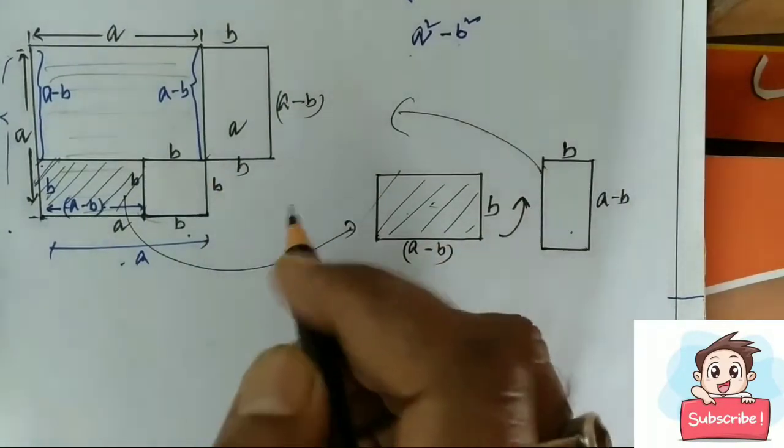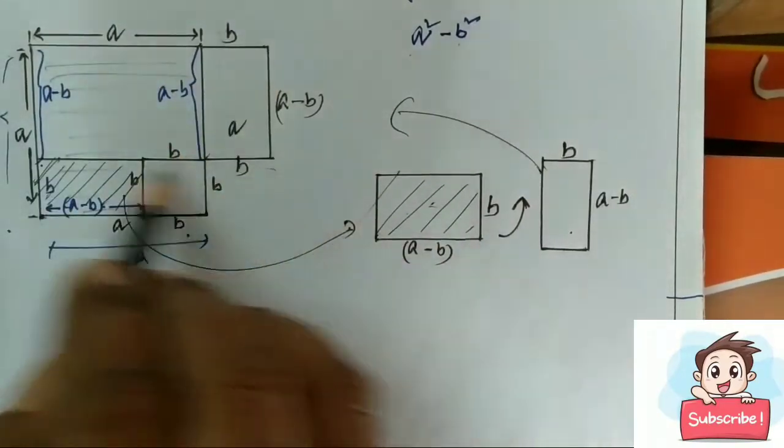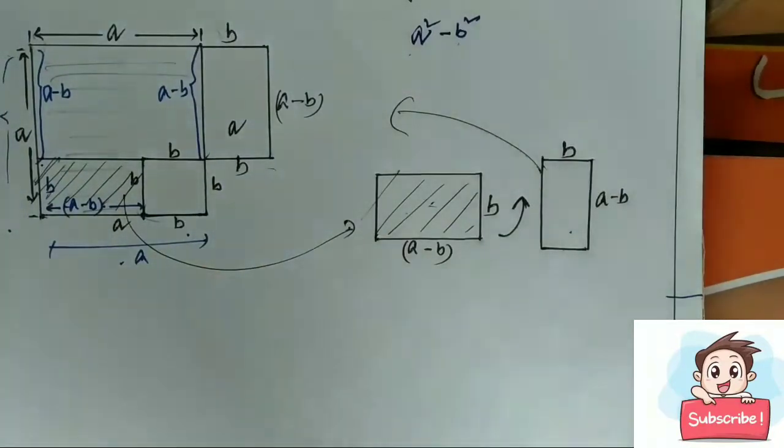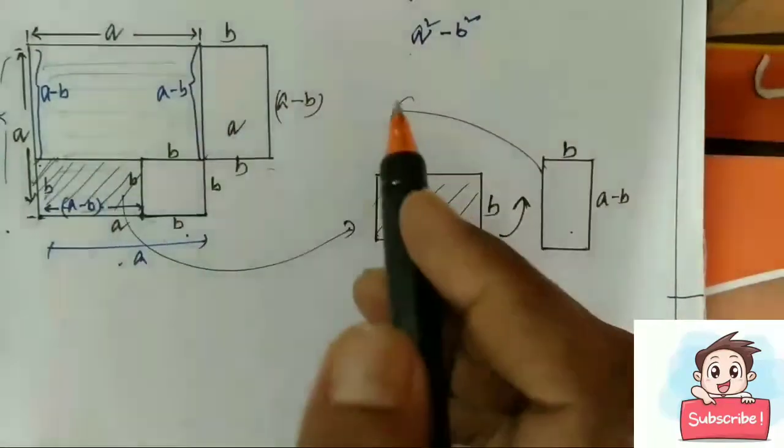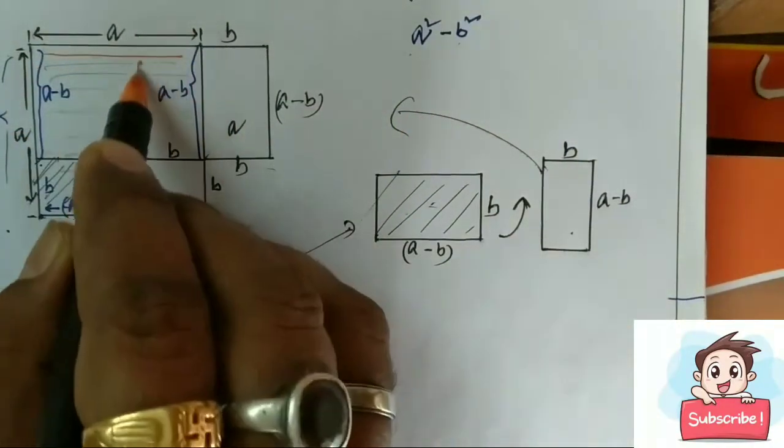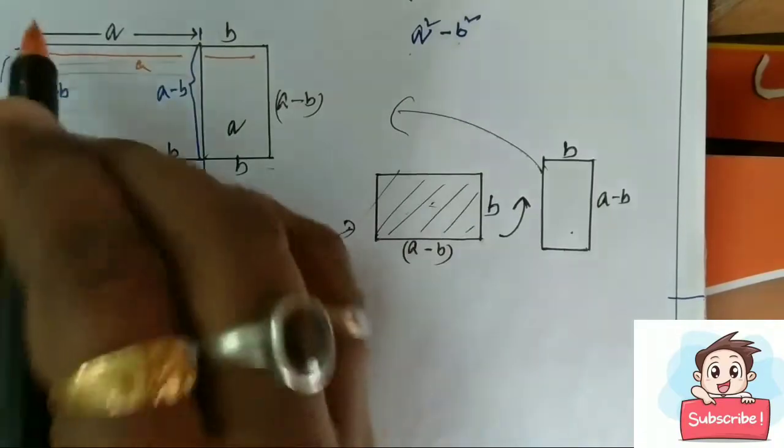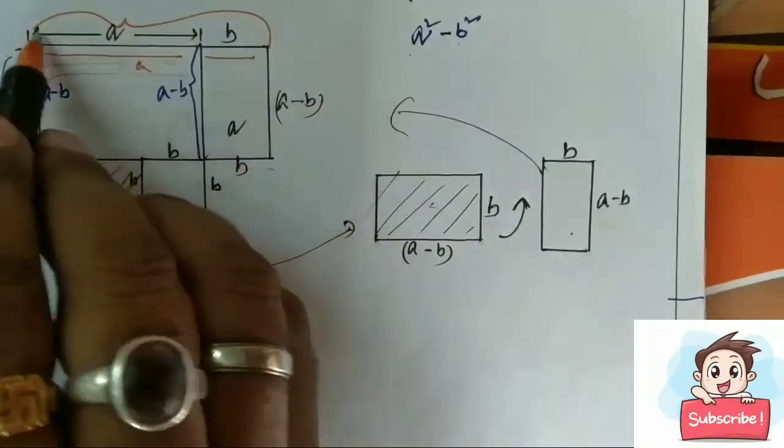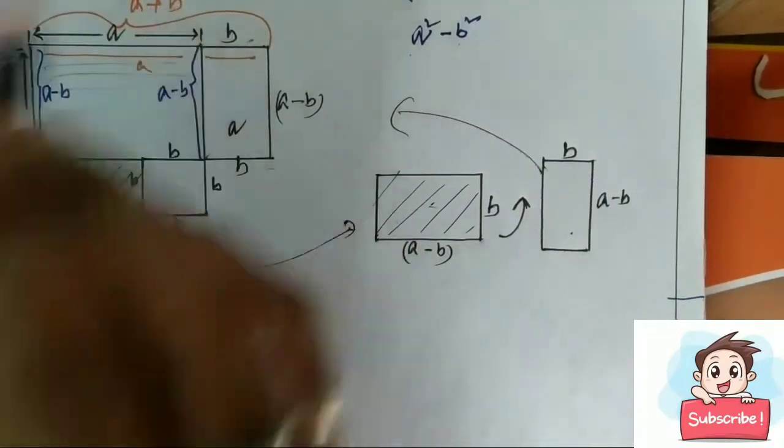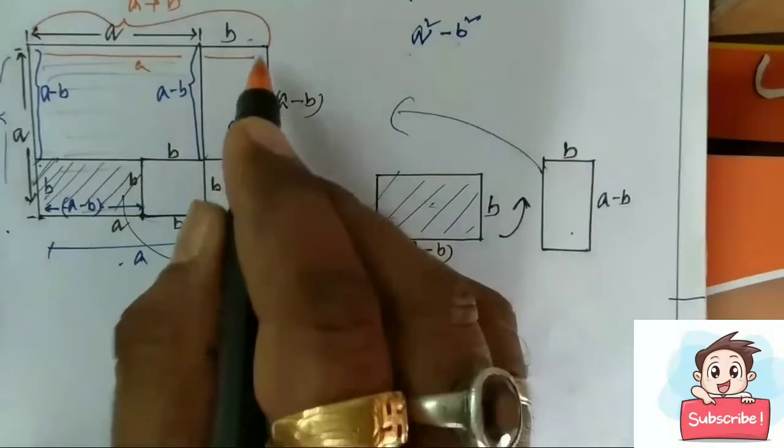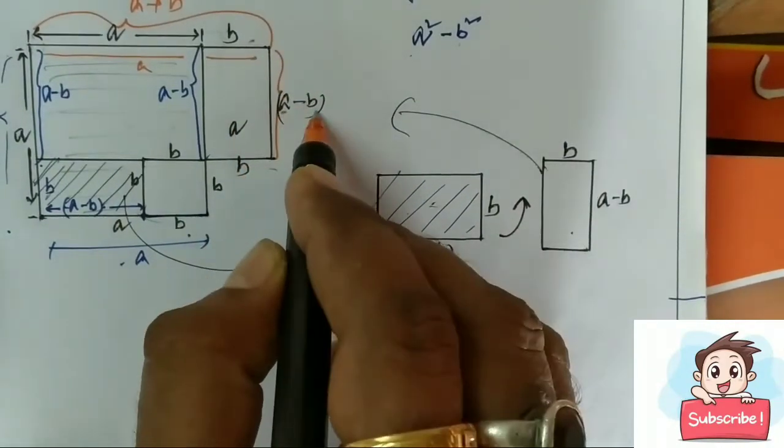So this one is b and this one is a minus b. This one is b. Now in this rectangle what do we get? In this rectangle a, b.